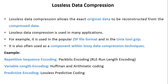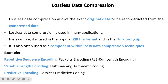Examples of lossless data compression: for repetitive sequence encoding we use packbit encoding or RLE; for variable length encoding, which reduces coding redundancy, we use Huffman and arithmetic coding; and for predictive coding we use lossless predictive coding in which a quantizer is absent. In this video we are going to see packbit encoding and Huffman encoding.